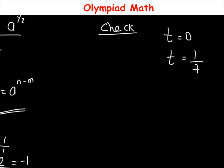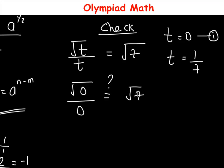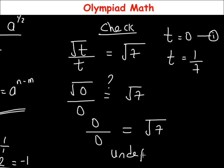Back to the equation: √t over t equals √7. Using the first value t equals 0: √0 over 0 gives 0 over 0, which is undefined, and is not equal to √7. So the value t equals 0 does not satisfy the given equation.